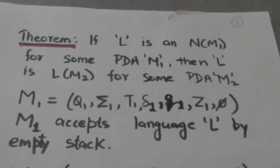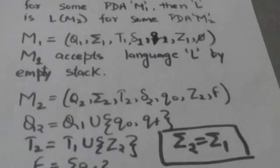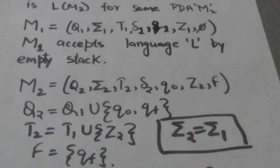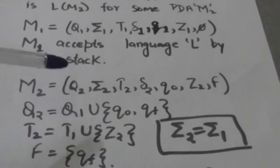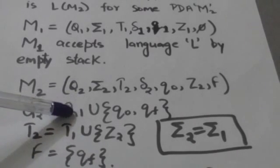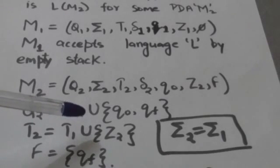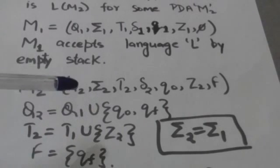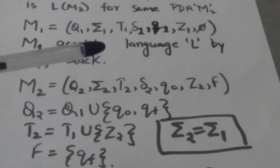We have to construct a pushdown automata M2 that accepts the same language L by final state. M2 is defined by a 7-tuple. M2 will contain all states of M1 and two other states Q0 and Qf, where Q0 is the initial state of M2 and Qf is the final state of M2. M2 contains all stack symbols of M1 and one more stack symbol Z2, which is the stack start symbol of M2.